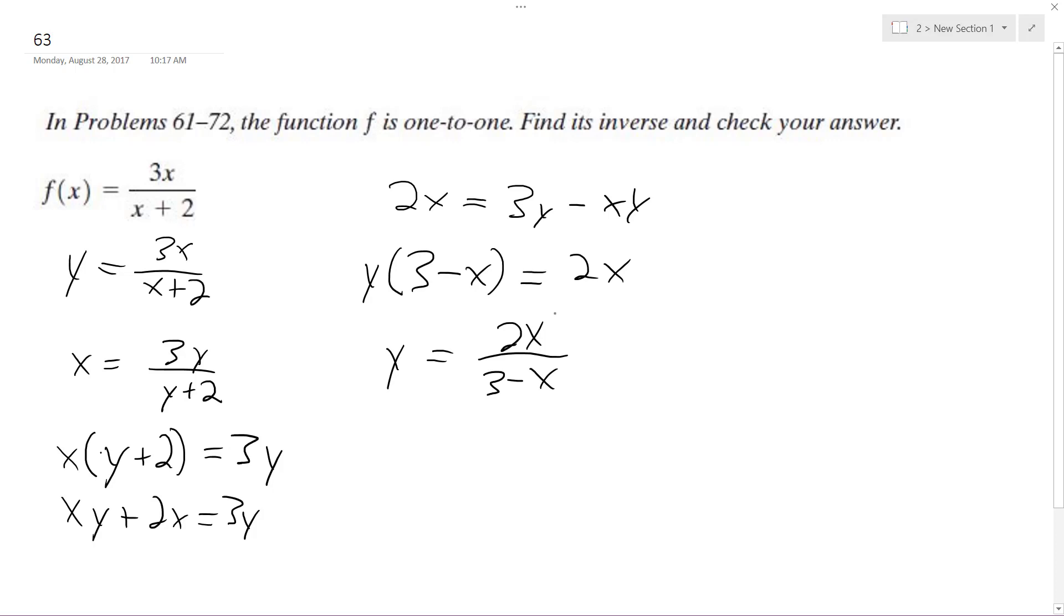So we can check this. By the way, this is f of negative 1, so f of f of negative 1 of x is going to be equal to 3 times quantity 2x over 3 minus x over 2x over 3 minus x plus 2.